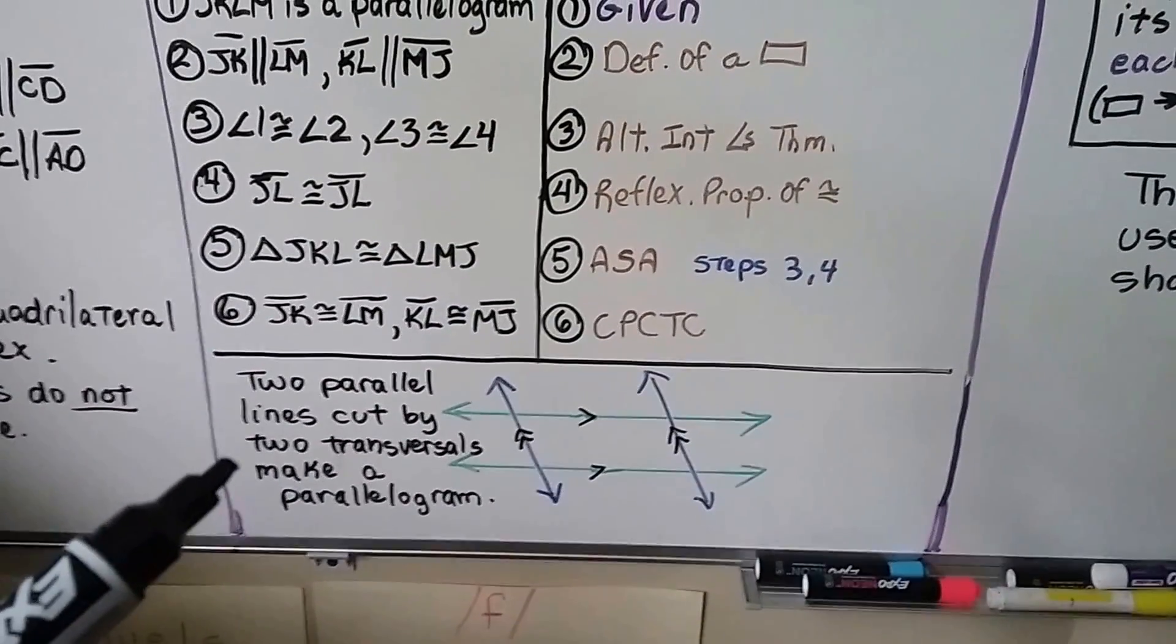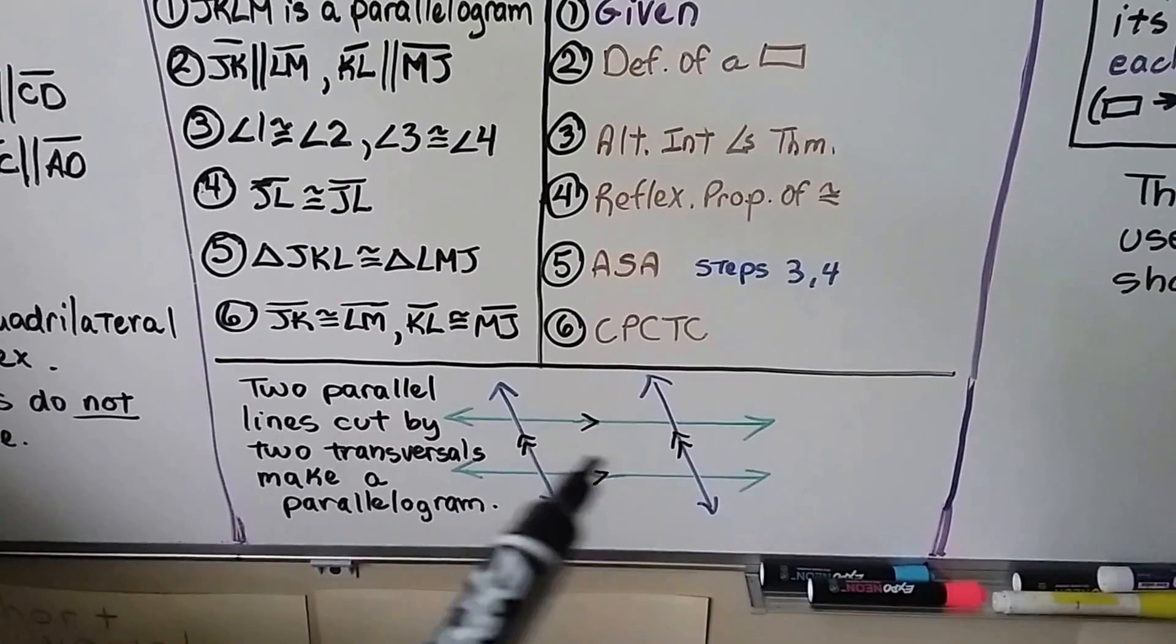So if you see two parallel lines cut by two transversals, they'll make a parallelogram on the inside.